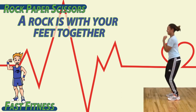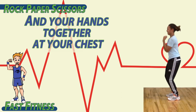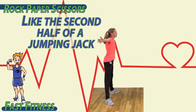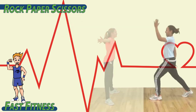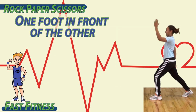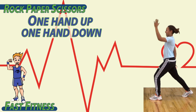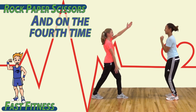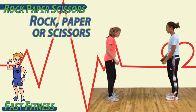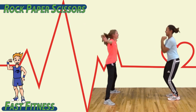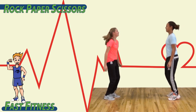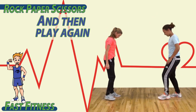Rock is with your feet together and your hands together at your chest. Paper is feet spread apart, hands out parallel to the floor, like the second half of a jumping jack. And scissors is one foot in front of the other, one hand up, one hand down. With a partner, jump up four times, and on the fourth time is when you throw out either rock, paper, or scissors with your body. Decide who wins, or if it's a tie, and then play again.